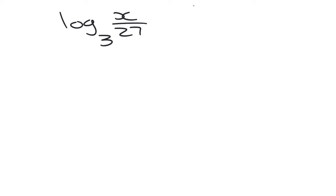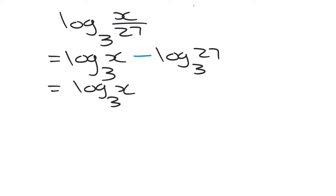Right, so we have a quotient. What are we going to do? Well, we're going to get log of x base 3. We're going to minus the log of 27 base 3. So log x base 3 stays unchanged.